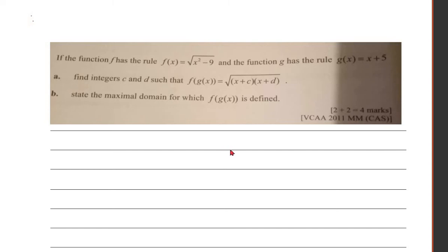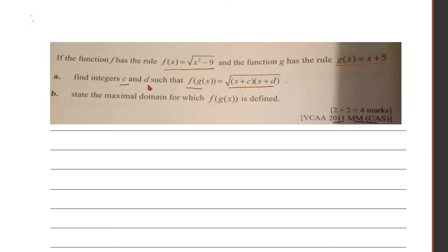This is a question from a 2011 exam — it looks like a function composition question. The function f(x) is equal to the square root of x squared minus 9, and g(x) is x plus 1. The question asks us to find f of g(x), identifying constants c and d.